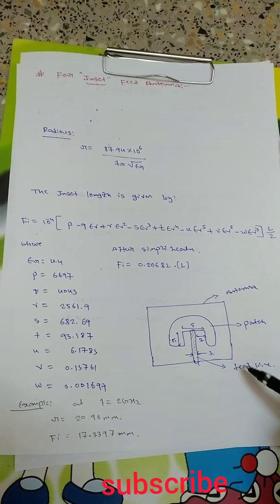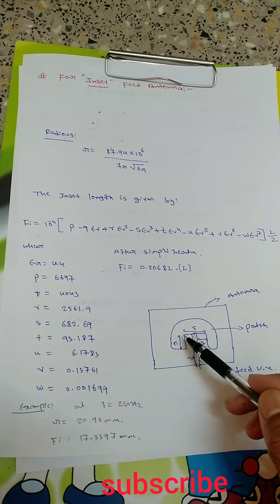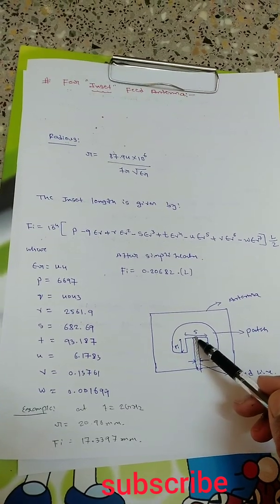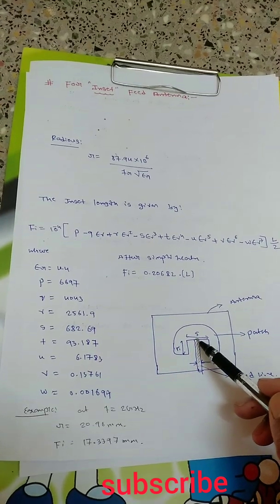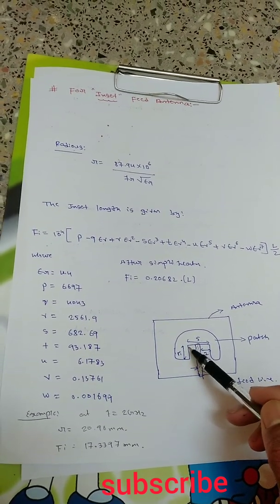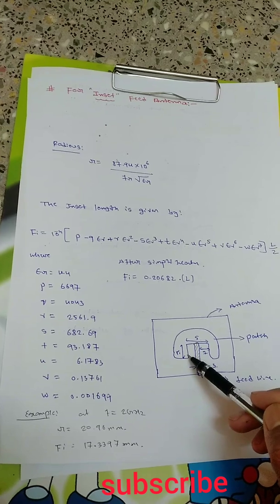This is substrate with patch and feed line which is inserted. To calculate this, it will be 3 mm width, and 1 mm on each side. So 3 plus 1 plus 1 equals 5. Now we need to find that 5.